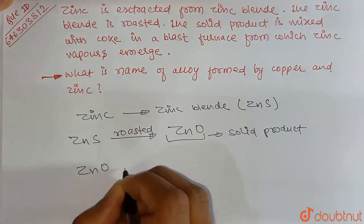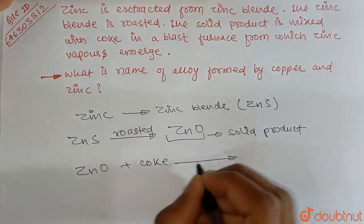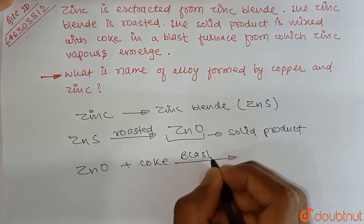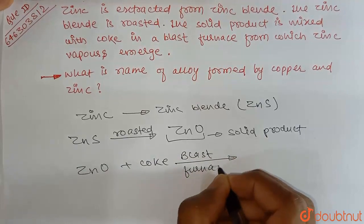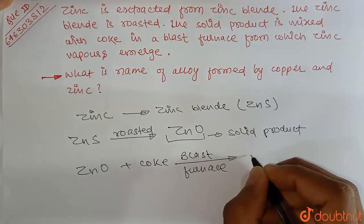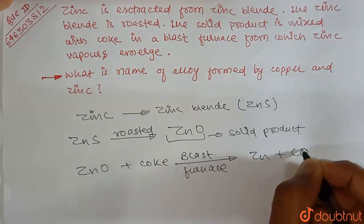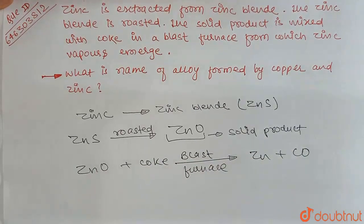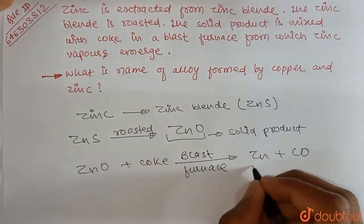So zinc oxide is mixed with coke in blast furnace. What is formed? Zinc and carbon monoxide. Here we have zinc vapor.